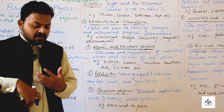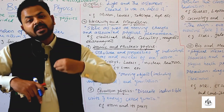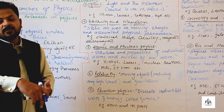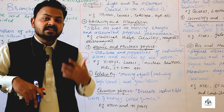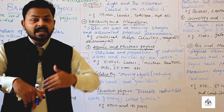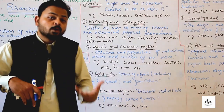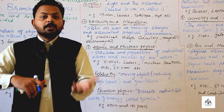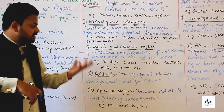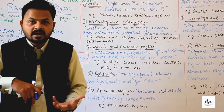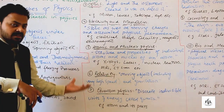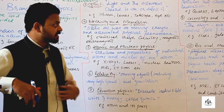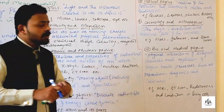Then we have quantum physics. The word quantum is derived from 'quanta,' which refers to definite, discrete packets of energy. Early scientists called these energy packets oscillators, then photons, and finally Max Planck called them quanta. Quantum physics is the study of very minute, discrete particles known as quanta, including the atom and its parts.